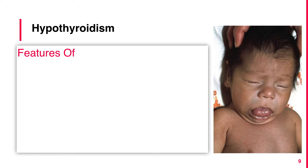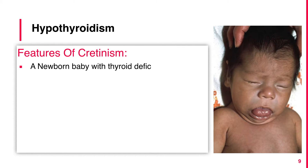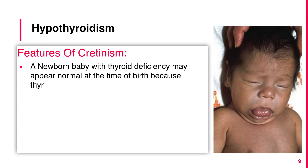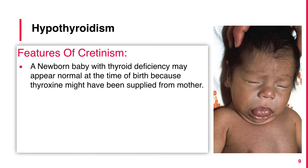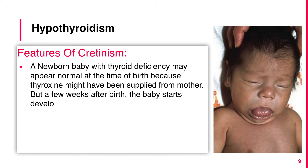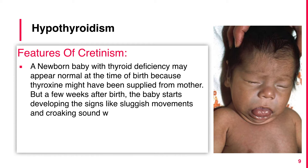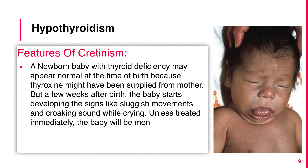Features of cretinism: a newborn baby with thyroid deficiency may appear normal at birth because thyroxine might have been supplied from the mother. But a few weeks after birth, the baby starts developing signs like sluggish movement and a croaking sound while crying. Unless treated immediately, the baby will be mentally retarded permanently.